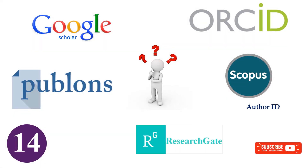Hi, welcome back. We often come across these terms: Google Scholar, Scopus Author ID, Publons or Researcher ID, or ORCID and ResearchGate. In this video, we will try to explain each of them. We use the information provided by service providers.